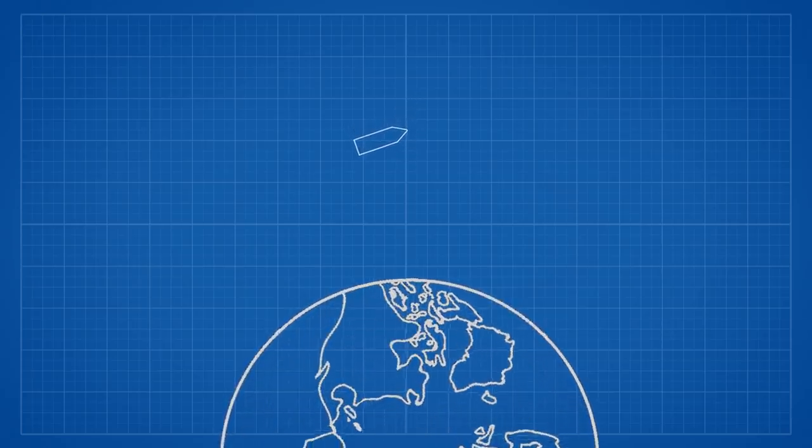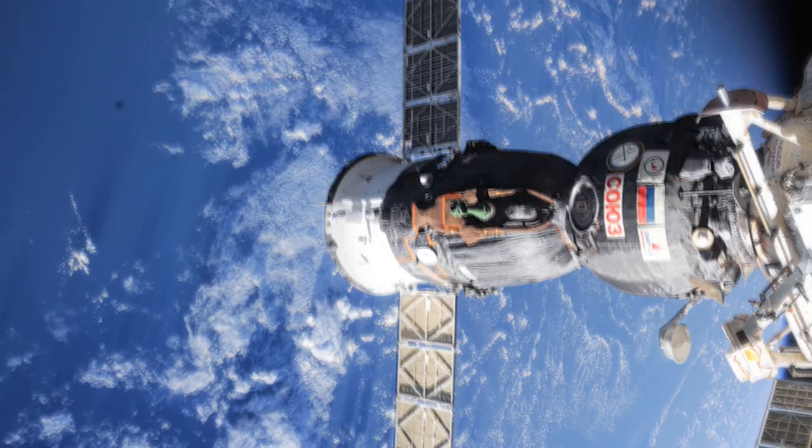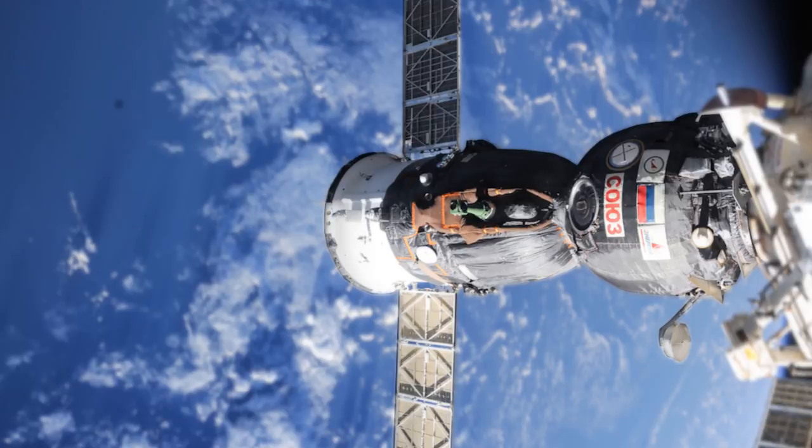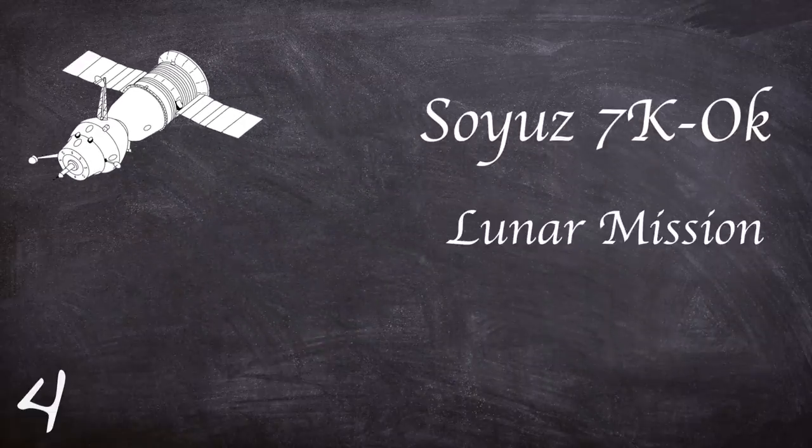This leads us to the spacecraft part of the program. The Soyuz spacecraft used for the International Space Station today is an evolution. Its beginnings went back to the early 1960s with the first generation Soyuz 7K-OK. It was intended to form the backbone of the Soviet lunar exploration mission.